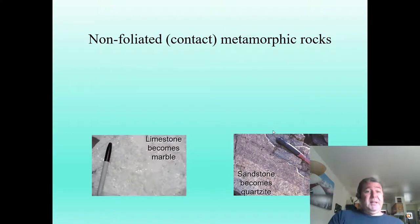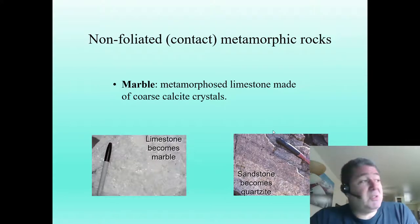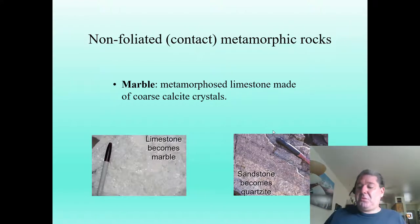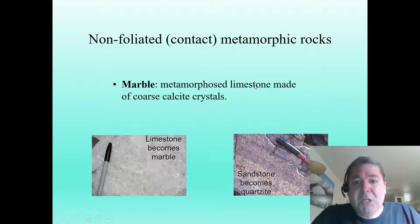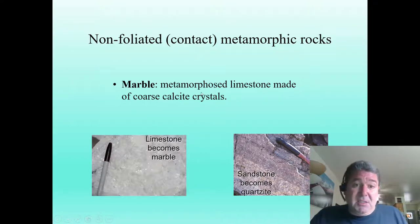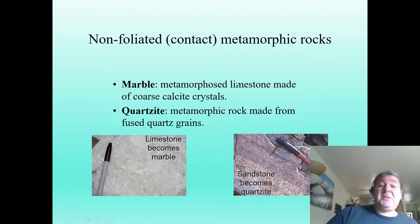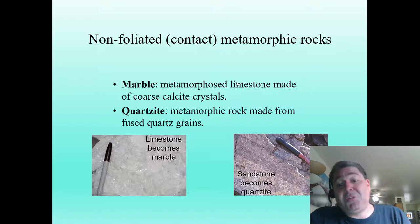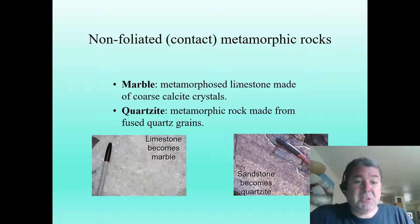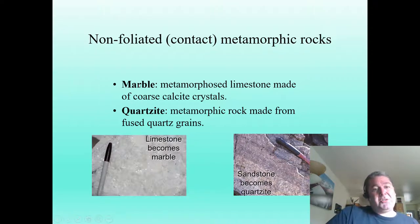A couple of different types of non-foliated metamorphic rocks: marble, which is often used for countertops or the stone at cold stone creamery. These are made of calcite crystals — they react to acid and are softer than glass. Then we have quartzite, a metamorphic rock made from fused quartz grains — sandstone turns into quartzite. Quartz is harder than glass, so one easy way to tell them apart is to scratch them against glass.